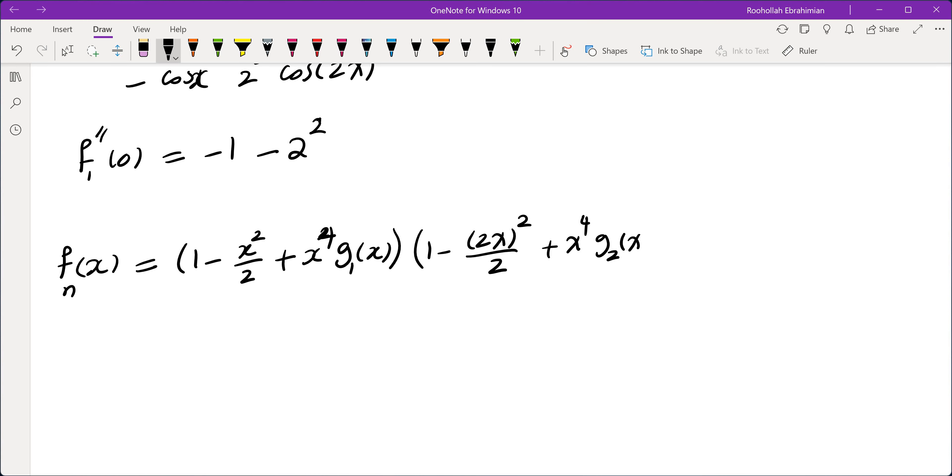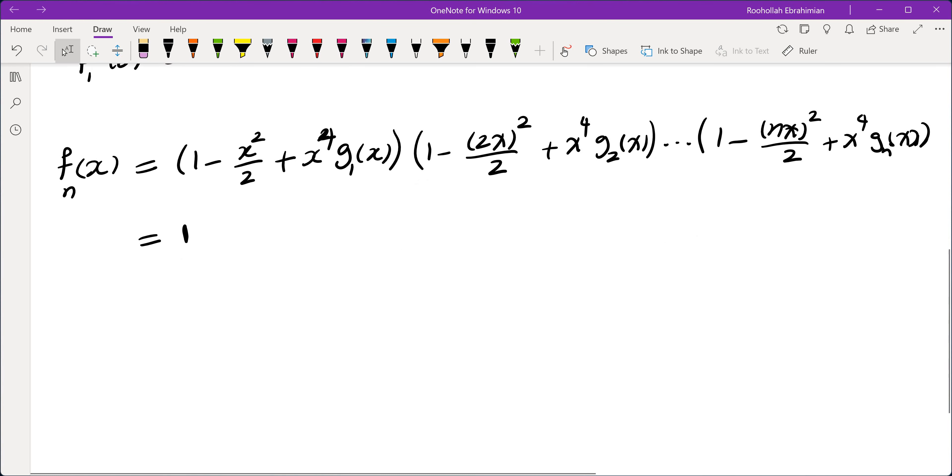The last term is going to be 1 minus nx^2/2 plus x^4 g_n(x). When we multiply these out, we get a constant of 1, because all of them have just 1. There is no linear term. The quadratic term is going to be minus x^2/2 minus 2x^2/2.